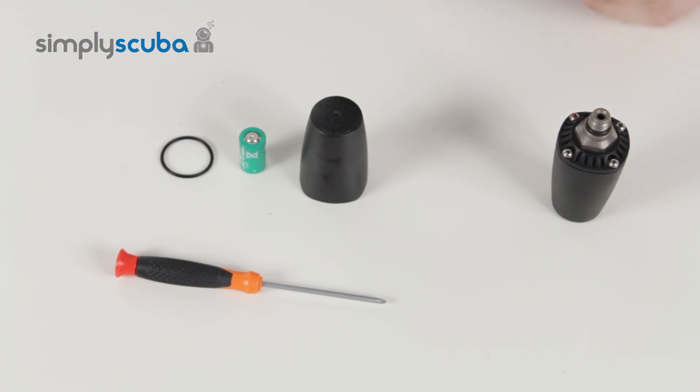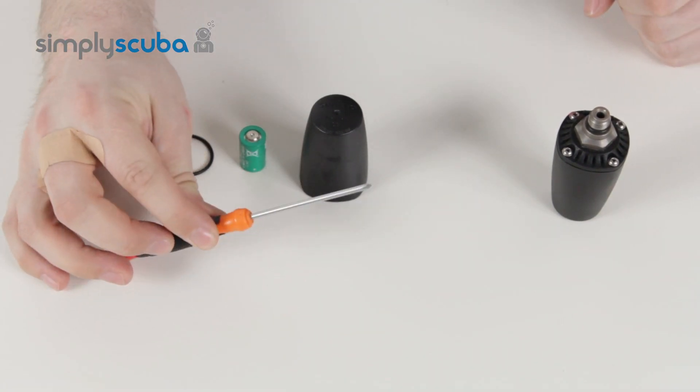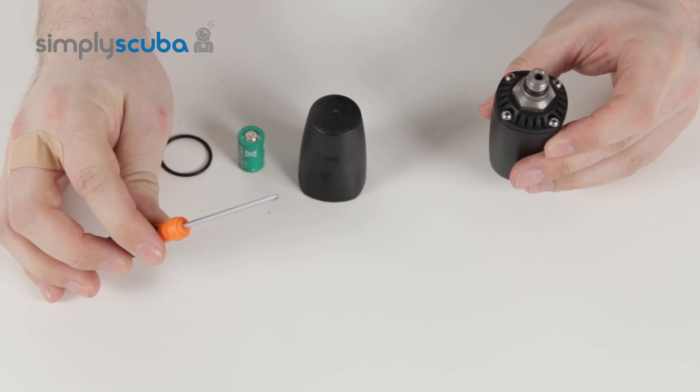All you need to replace the battery of your Suunto transmitter is a small Phillips head screwdriver and your transmitter itself.